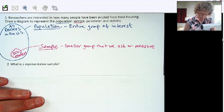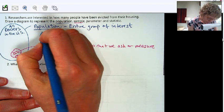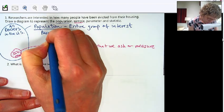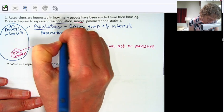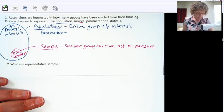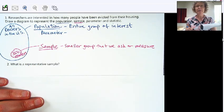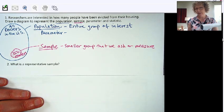Now we go to parameter. Parameter has to do with the population. It's really handy that those two start with P.